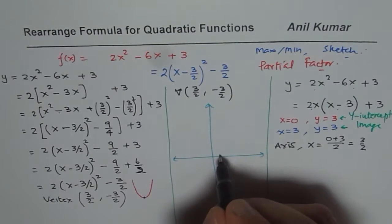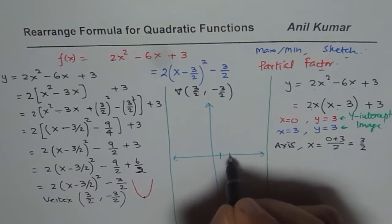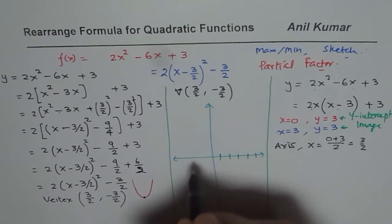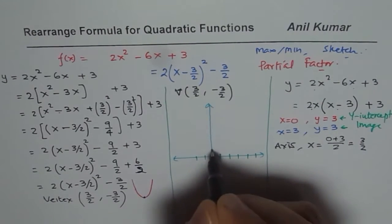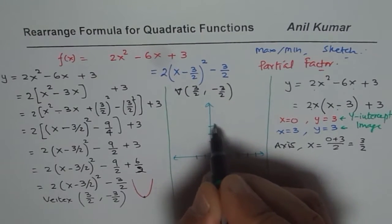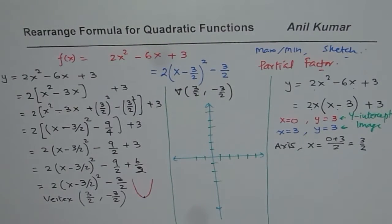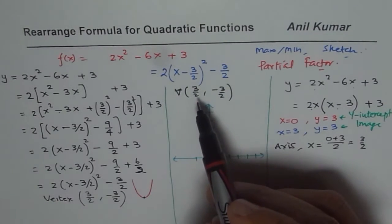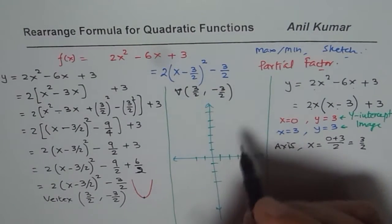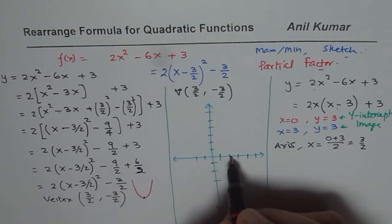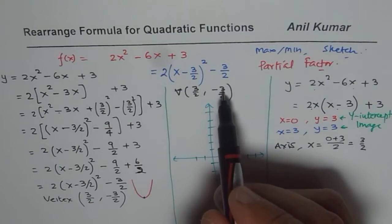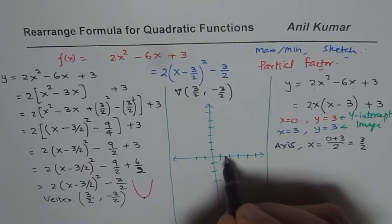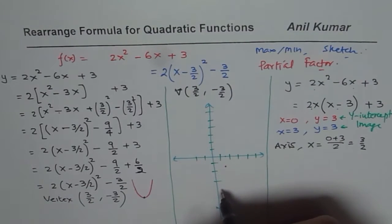What we have here is the vertex at 1.5 and minus 1.5. So, let me make some scale here. So we have 1, 2, 3, 4, 5. Let's say 1, 2. So this is 1, 2, 3. 1, 2, 3, 4, 5, 6. Parabola is opening upwards, that we know. Let's now figure out where the vertex is. So, vertex x value is 1.5. So, this is my 1, 2. 1.5 is kind of here. And value is minus 1.5. So, minus 1.5. So, that becomes our vertex.